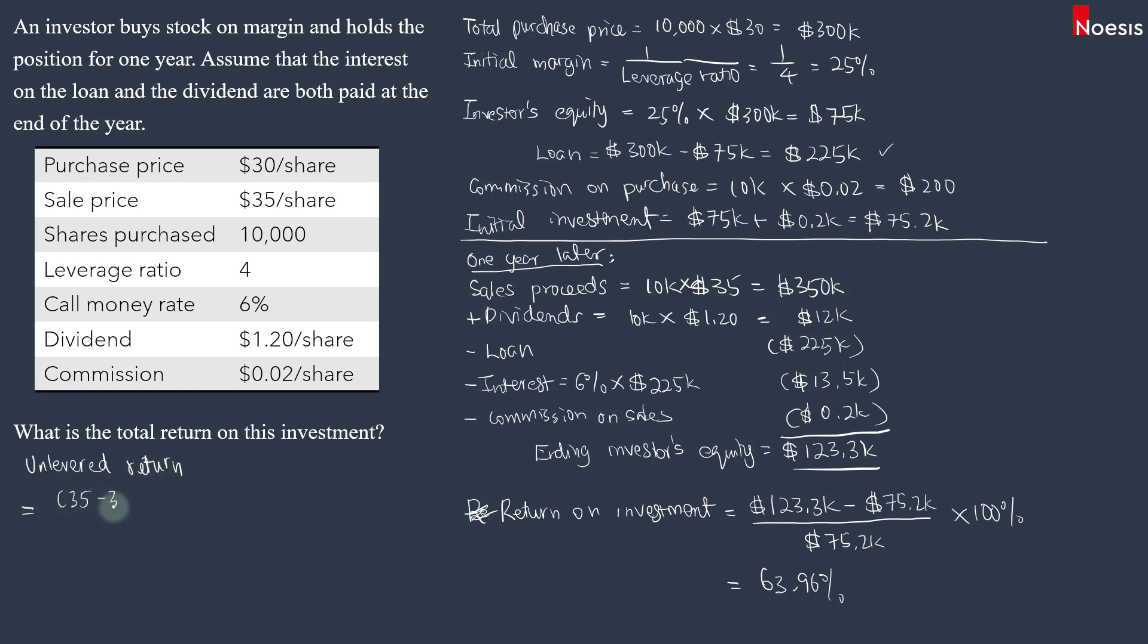We'll ignore all the commission and the loan interest. Then we divide by the purchase price. So this will be 20.67%. So if you factor in the leverage, which is four times, this would be about 82.68%. But of course, the net return will be lower because of the interest on the loan.